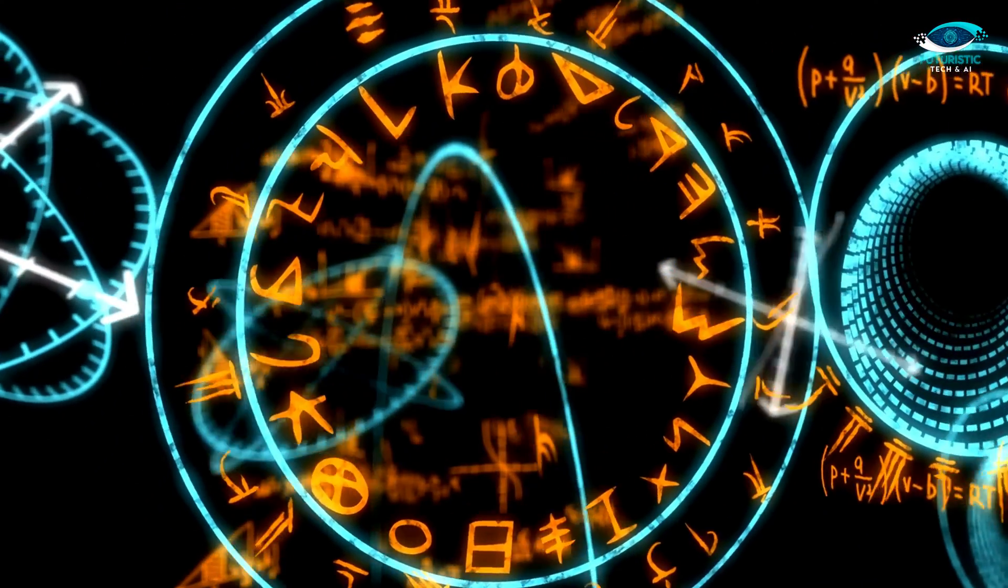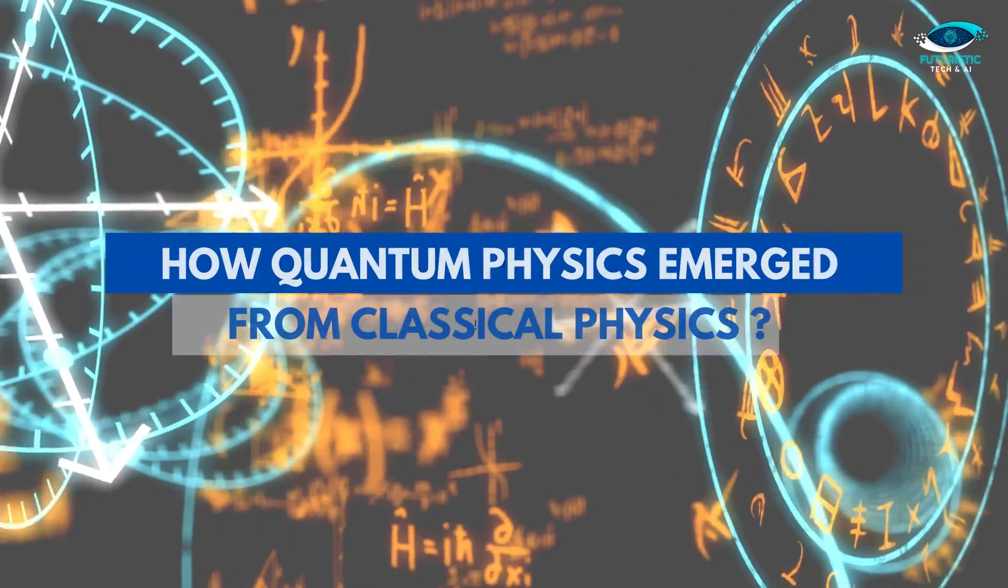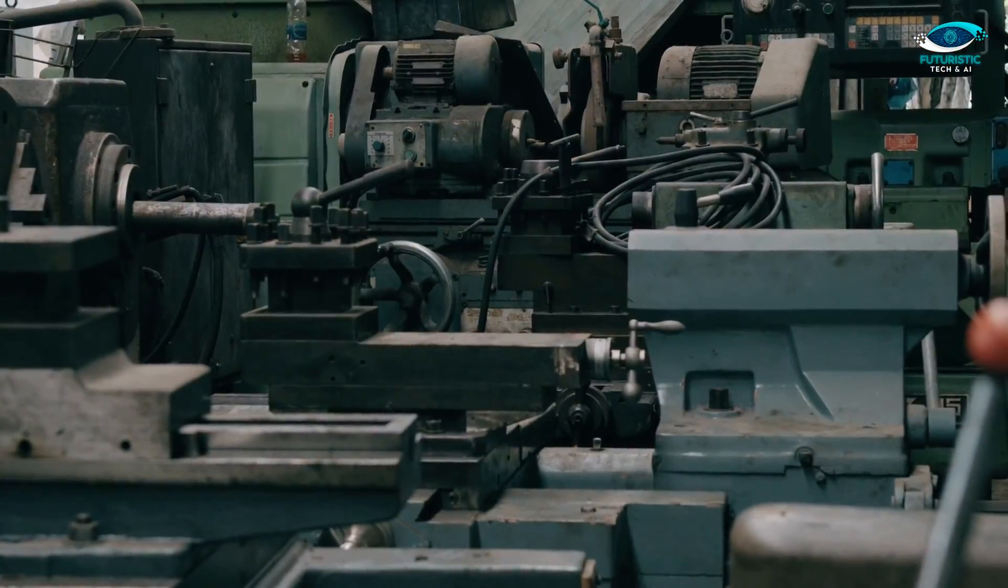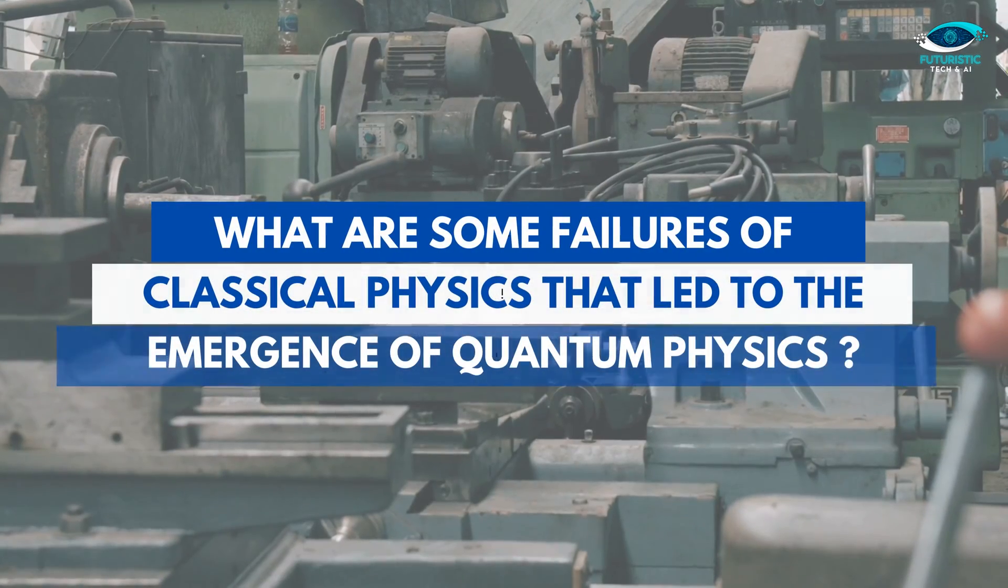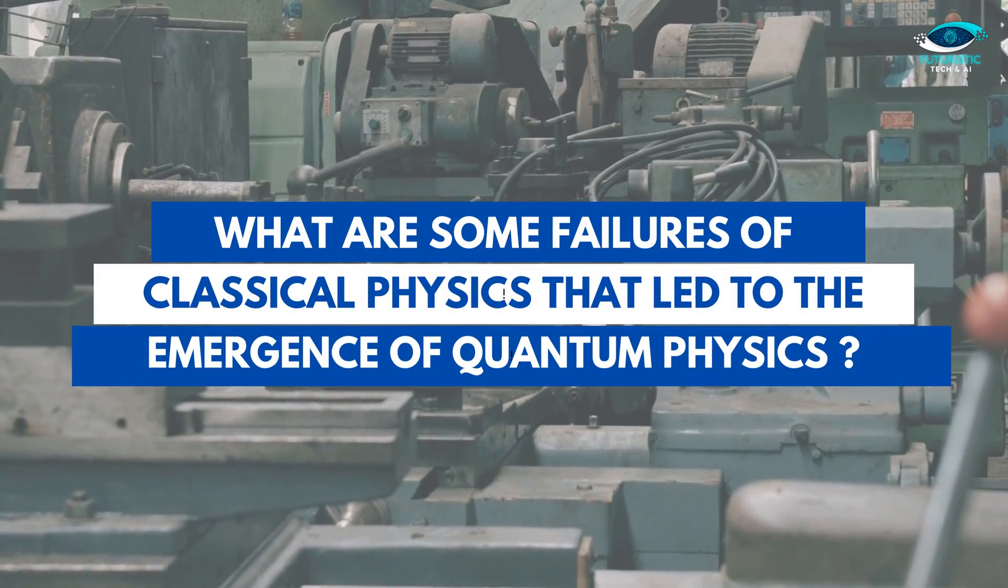Then the most interesting, hot discussion of the topic is how quantum physics emerged from classical physics, and to rephrase this, what are some failures of classical physics that led to the emergence of quantum physics?